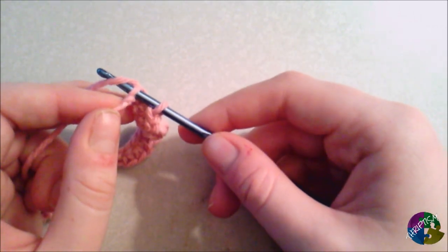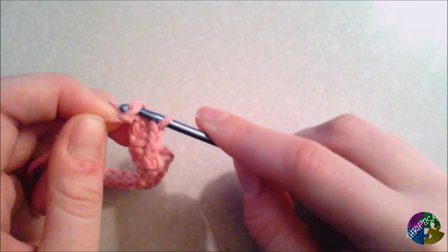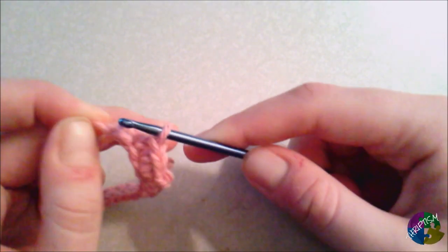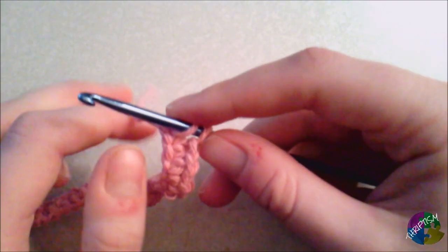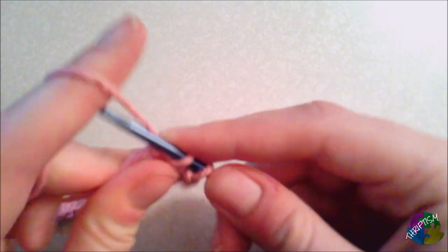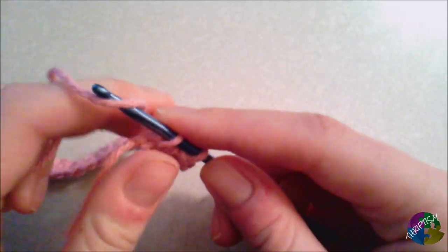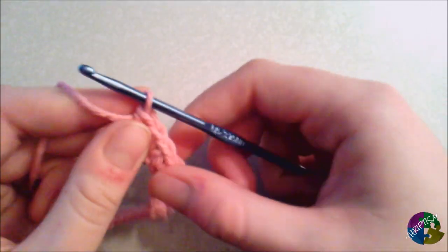All right, so now we are on the last chain here. You're going to go ahead and do the same thing of yarn over, pull it through, yarn over again, and complete your last single crochet on this row.